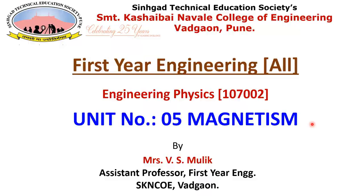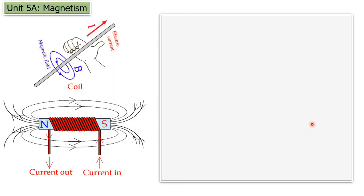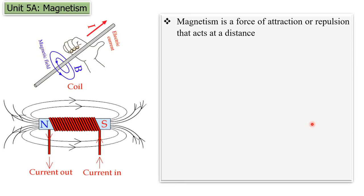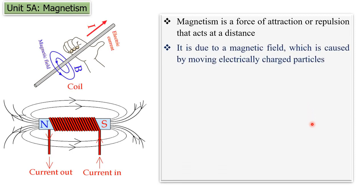Now, what is meant by magnetism? All of you know what is meant by magnetism. It is the property — we can say magnetism is a property of certain substances to attract or repel other objects. So we say magnetism is a force of attraction or repulsion.